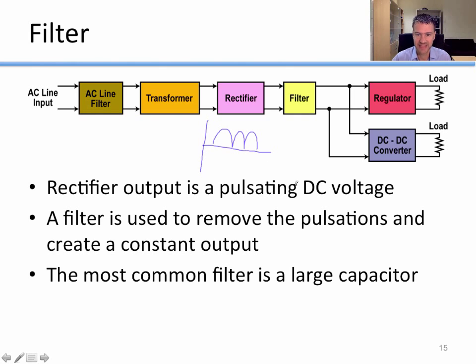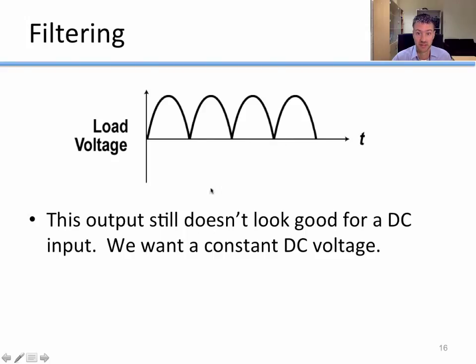The filter takes that pulsating DC voltage, or what's almost DC voltage, and removes those pulsations to create a more constant output. The filter is actually really simple. The most common type of filter is just a really big capacitor.